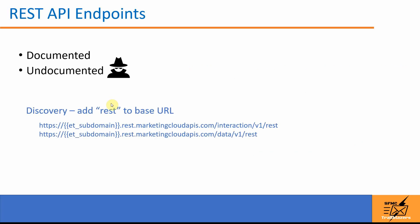First, let us look at the various REST API endpoints. The ones in the Salesforce documentation are the documented ones, but there are a lot more endpoints that are not documented. To find those, you need to identify the base URL for each category you want to discover, and then add the REST keyword after the version.